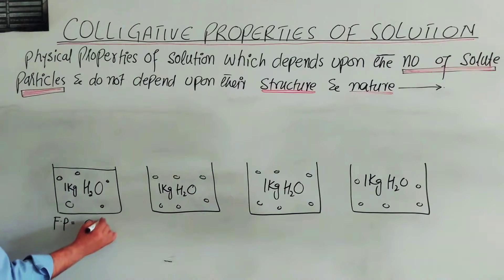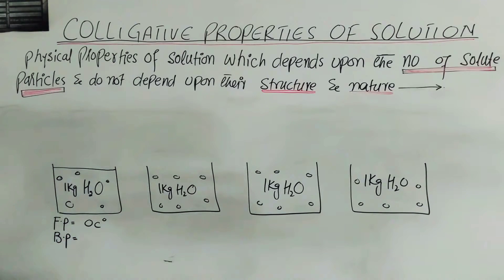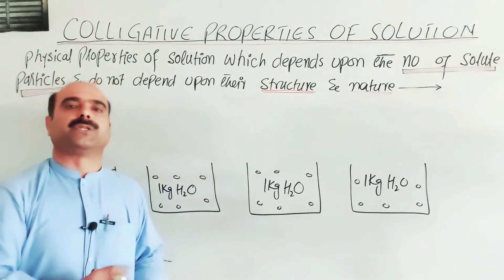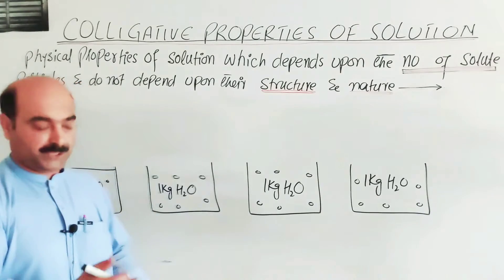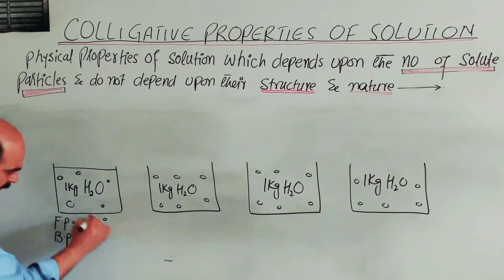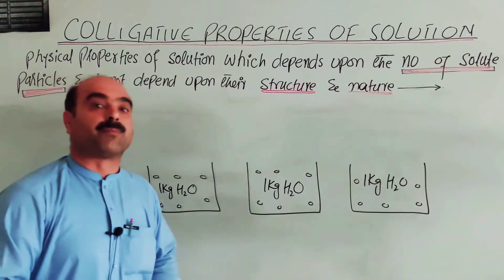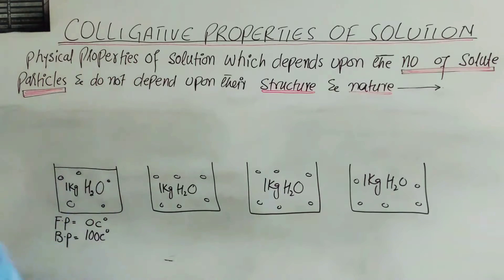The pure water freezing point is 0 degrees C, and under normal atmospheric pressure, its boiling point is 100 degrees C. These freezing point and boiling point values are physical properties of the pure solvent. Now we will compare colligative properties versus these physical properties.